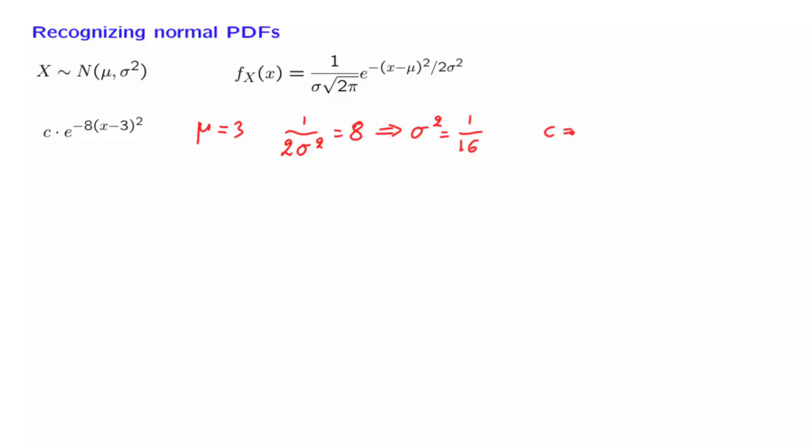And if you also want to find out the value of this constant C, you check the formula for normal PDFs. The constant C is 1 over the standard deviation, which is 1 fourth in our case, the square root of this number, times the square root of 2 pi.